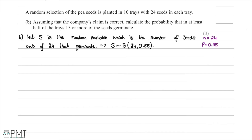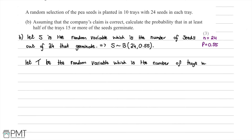We've covered the 24 seeds in each tray, but we also have 10 trays. So we let T be the random variable representing the number of trays with at least 15 or more seeds germinating. T is binomially distributed with N equal to 10, but we don't yet know the probability — we'll call it Q and work it out using the random variable S.